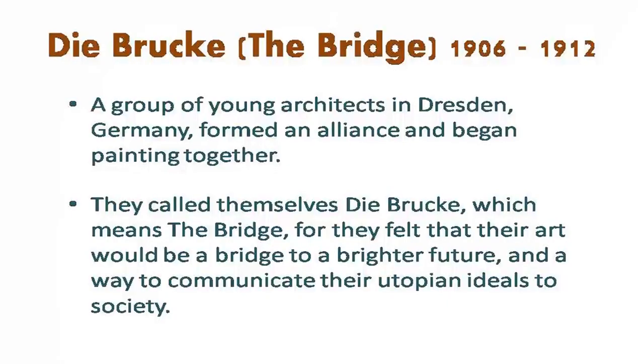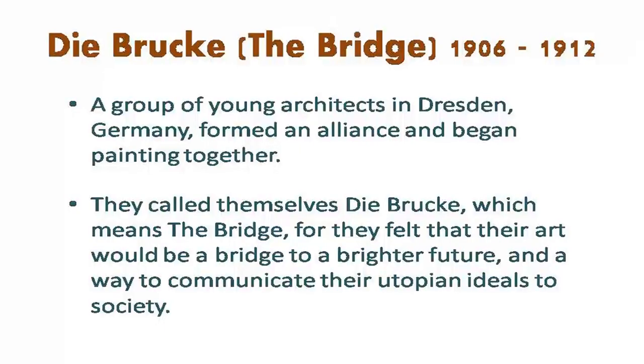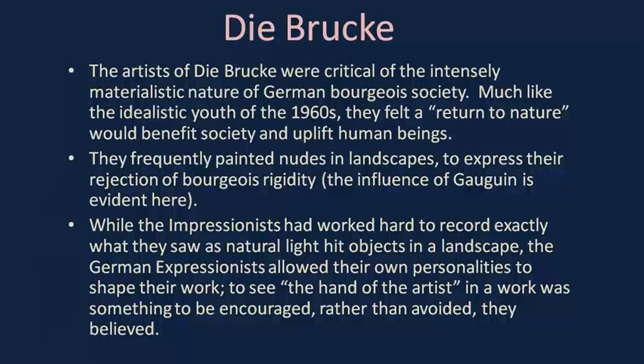Two groups emerged, both part of German Expressionism. One group is known as Die Brücke — in English, 'the Bridge' — and the other is Der Blaue Reiter — in English, 'the Blue Rider.' Both groups produced a great amount of beautiful works of art, all subscribing to the idea of Expressionism. Die Brücke lasted from 1906 to 1912 and was a group of young architects in Dresden, Germany, who formed an alliance and began painting together.